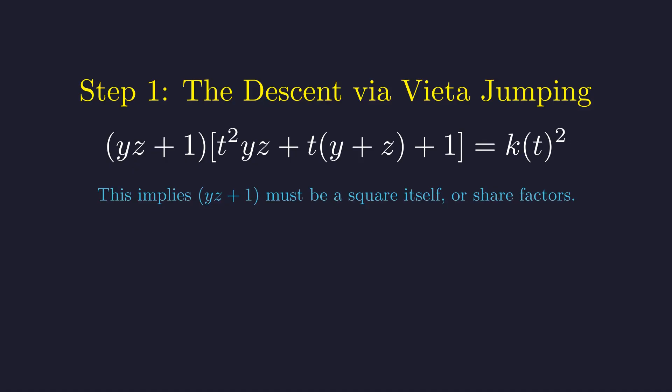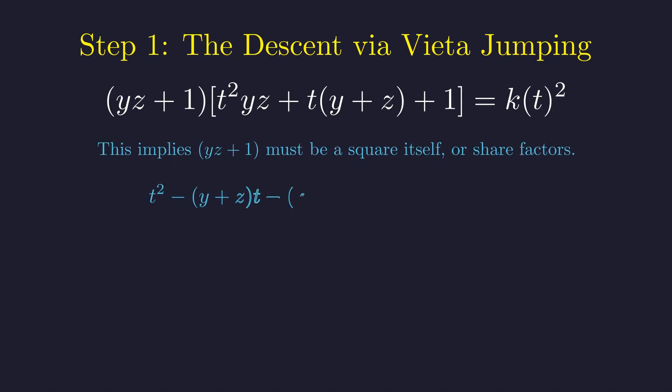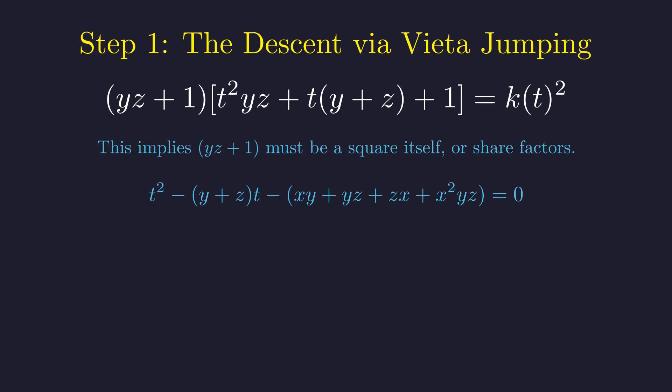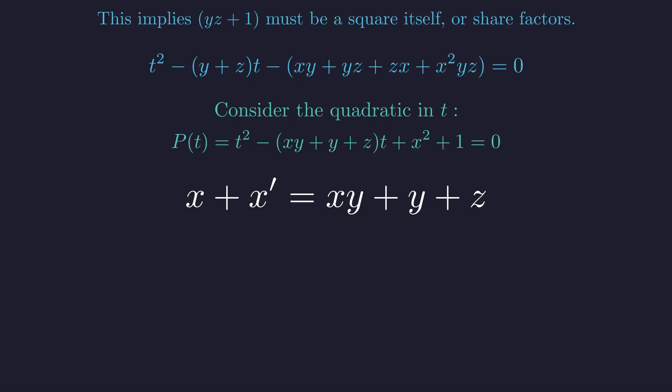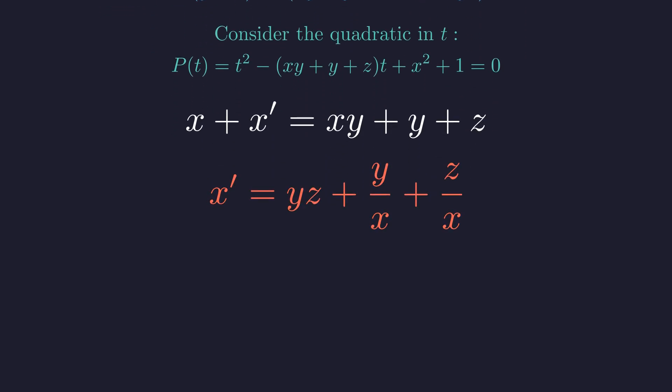Now, the full details here get a bit intricate, but the key insight is that this creates a specific quadratic relationship. Through some careful algebra that I'll spare you the details of, it turns out that any integer solution t must satisfy a specific quadratic equation. The beautiful thing about quadratic equations is Vieta's formulas. Since we know x is one root of our quadratic, there must be another integer root, let's call it x prime. By Vieta's formulas, x plus x prime equals this specific expression involving x, y, and z. The exact formula for x prime gets a bit messy to derive, but here's what matters. We're guaranteed that x prime is an integer, and the triple x prime, y, z gives us a new solution.